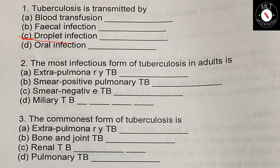Second question: The most infectious form of tuberculosis in an adult is — option A: extra-pulmonary TB, option B: smear-positive pulmonary TB, option C: smear-negative TB, option D: miliary TB. The answer is option B, smear-positive pulmonary TB. Note: miliary TB is a potentially fatal form of TB.